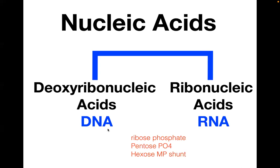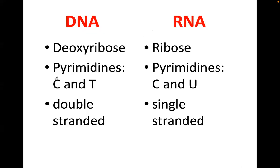The pentose phosphate pathway provides the ribose phosphate backbone utilized for DNA and RNA synthesis. Some important properties differentiate DNA from RNA. In DNA, the sugar is deoxyribose; in RNA, it is ribose.